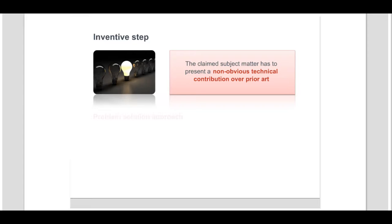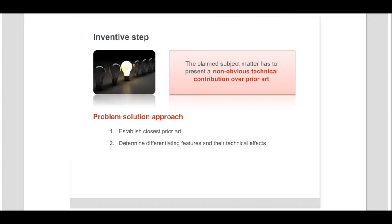First, the closest prior art is established. Then, according to the problem-solution approach, those features that are not known from the closest prior art are identified and their technical effects are determined. Based on these technical effects, an objective technical problem is formulated and presented to the person skilled in the art.